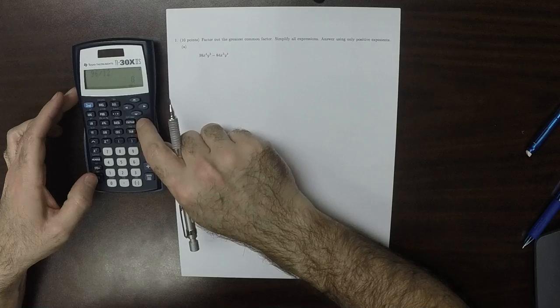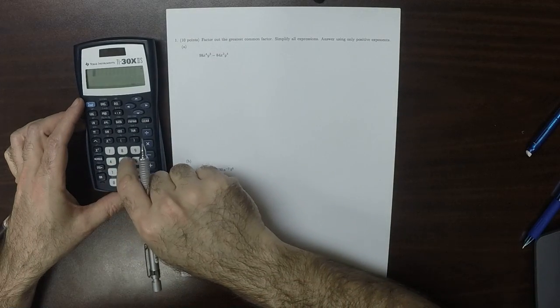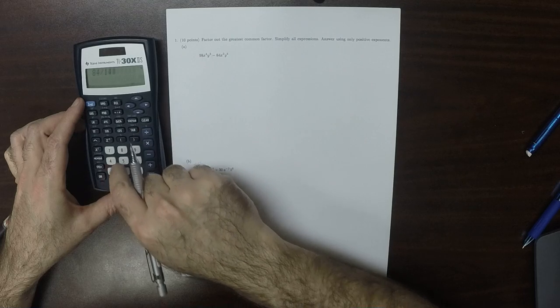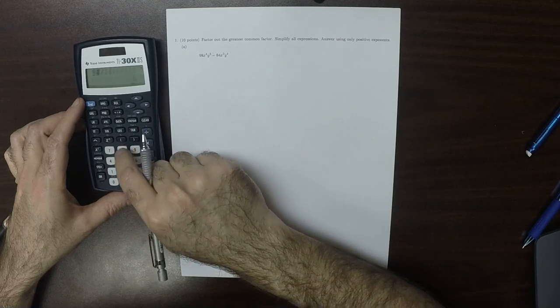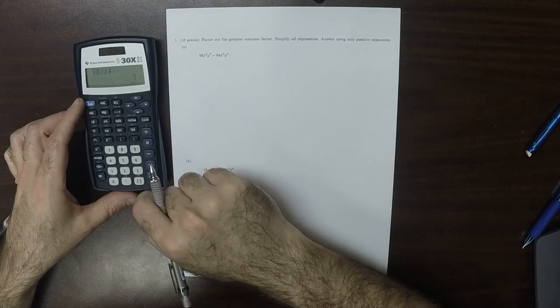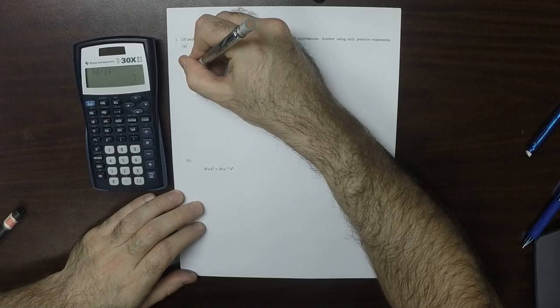We want a common factor of 98 and 84. So 84 divided by 14 is 6, 98 divided by 14 is 7. So if we factor out 14...